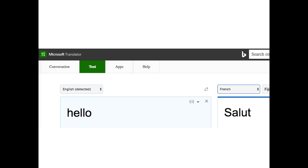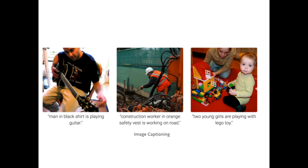Where are we seeing neural networks like this in the wild? Recurrent neural networks are used a lot. Translation is a good example — being able to translate from one language to another. Image captioning is another great example: passing in an image and generating a caption from it.